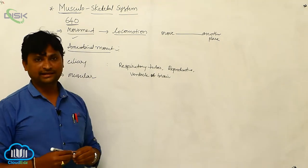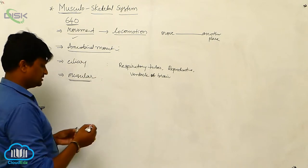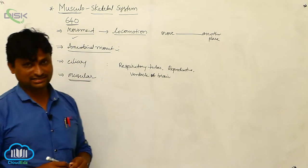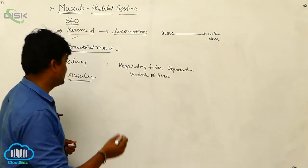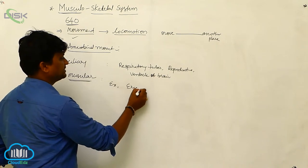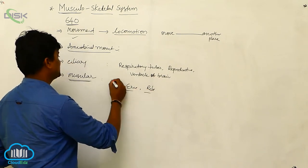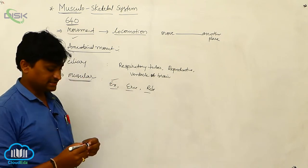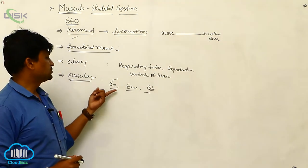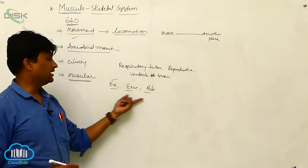The last type is muscular movement. Muscles are special for three functions: excitability, erectability, and relaxation. All three of these properties are expressed in muscular movement.